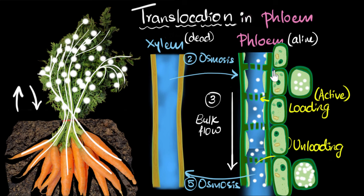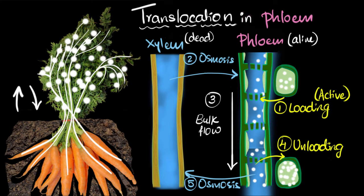And that's why these cells are called companion cells. And so in reality, if you're wondering, when you want to load the sugars, you have to first load it into the companion cell and then it goes into the phloem. Similarly, while unloading, it first goes into the companion cell and then it goes out of the phloem. But that's a small detail. We don't have to worry too much about that. So it's those companion cells that keep them alive.